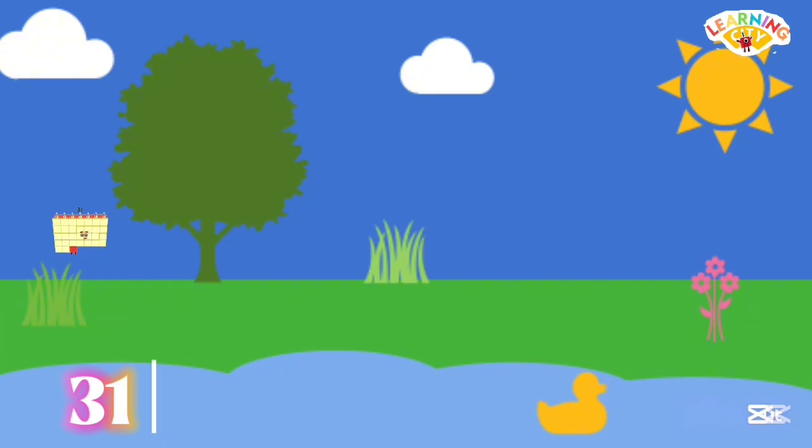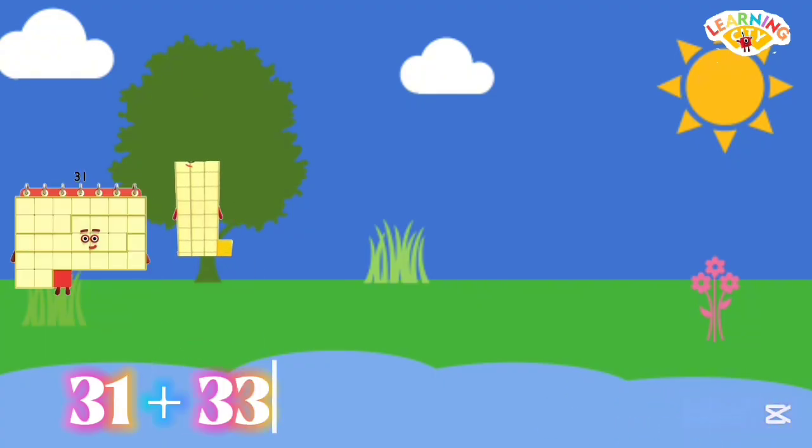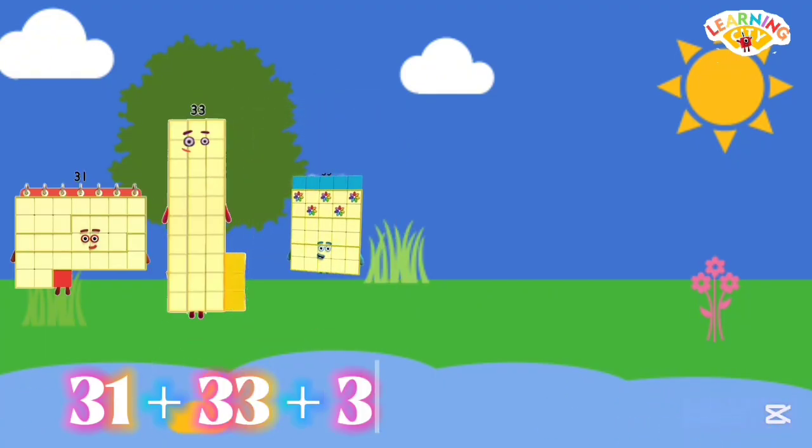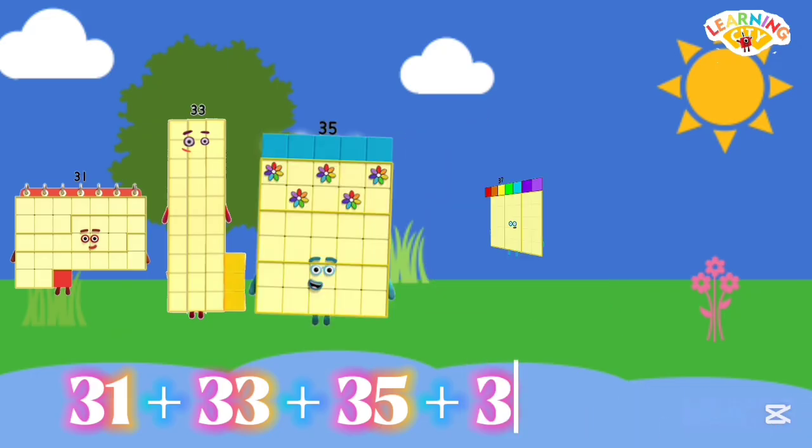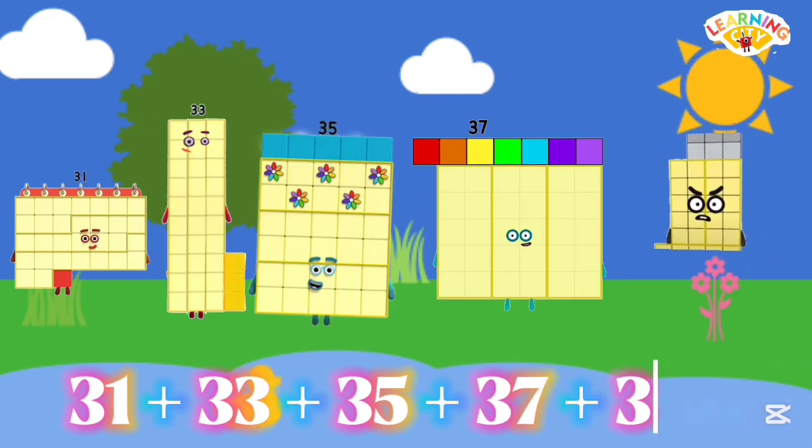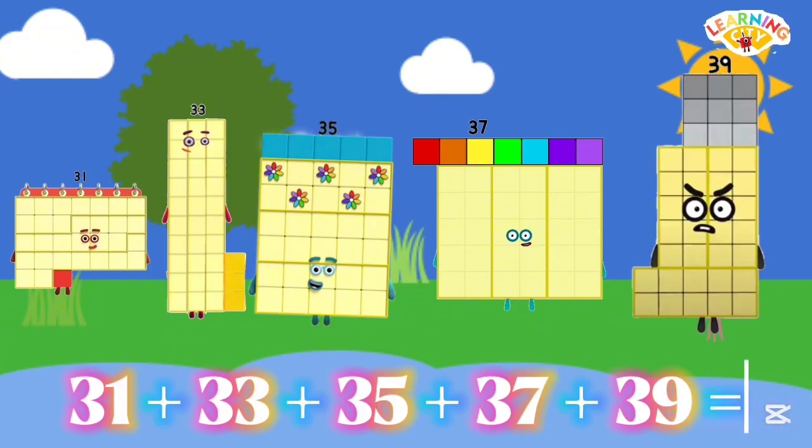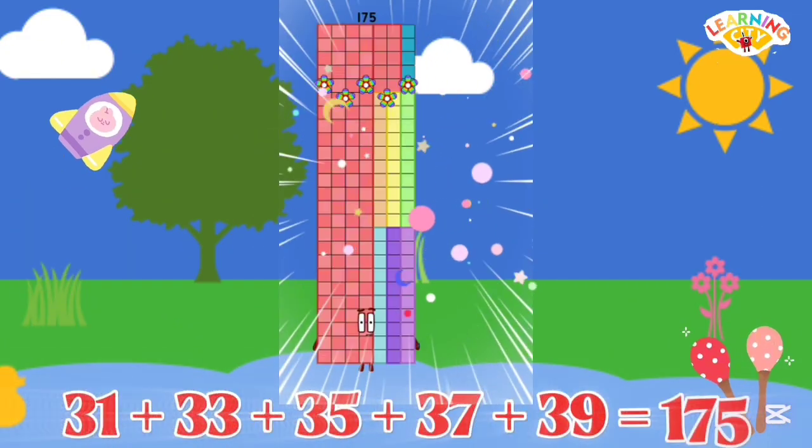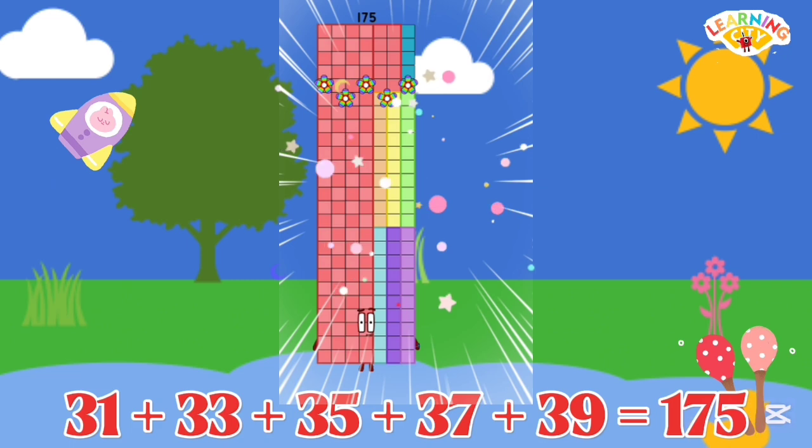31 plus 33 plus 35 plus 37 plus 39 equals 175.